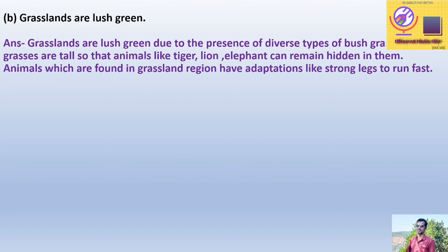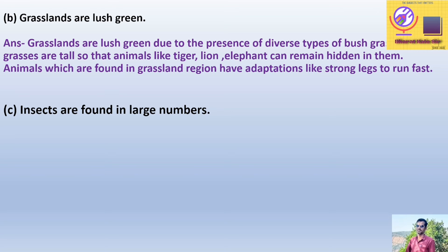Statement B: Grasslands are lush green. Answer: Grasslands are lush green due to the presence of diverse types of bushes and grasses. Grasses are tall so that animals like tigers, lions, and elephants can remain hidden in them. Animals found in grassland regions have adaptations like strong legs to run fast.